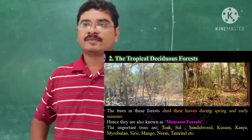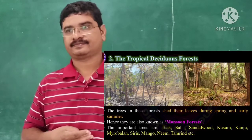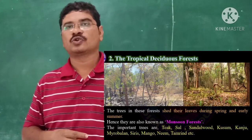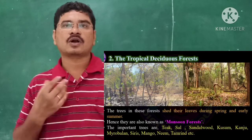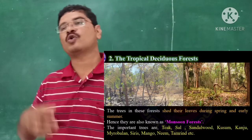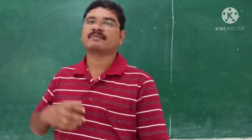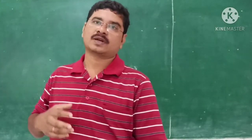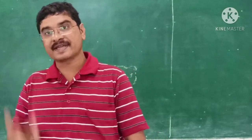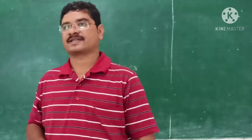The important trees found in tropical deciduous forests are teak, sal, sandalwood, kusum, kanju, myrabolam, seris, mango, neem, tamarind, and many others. These are the natural trees that grow in tropical deciduous forests.